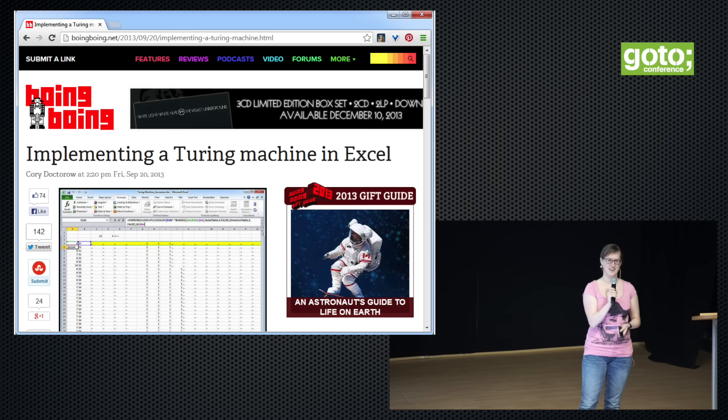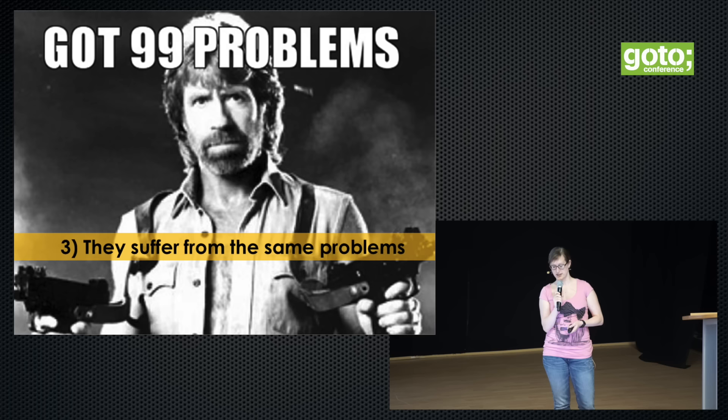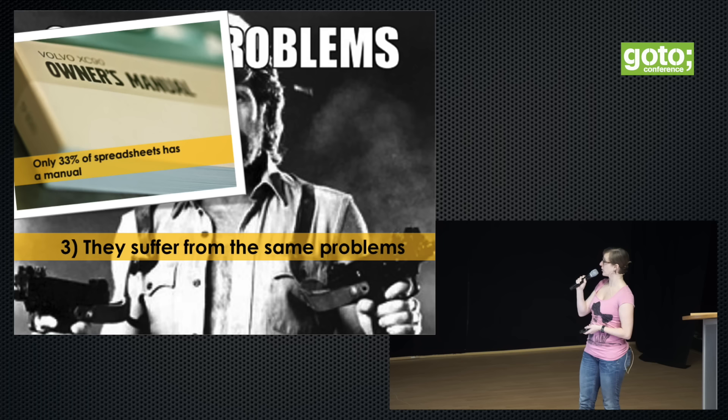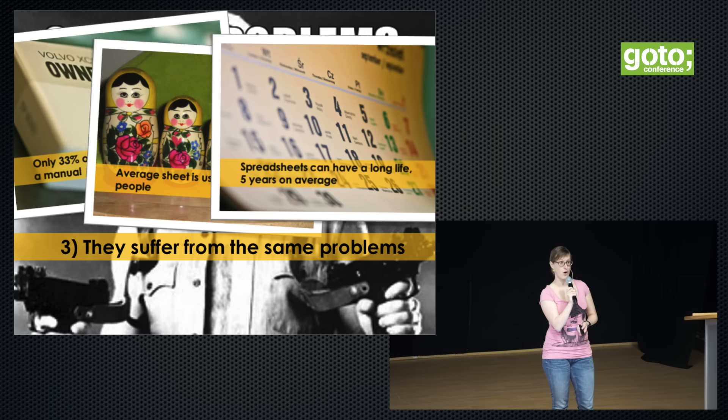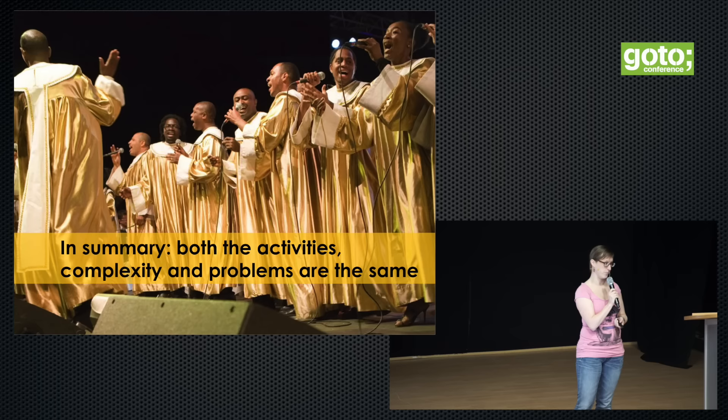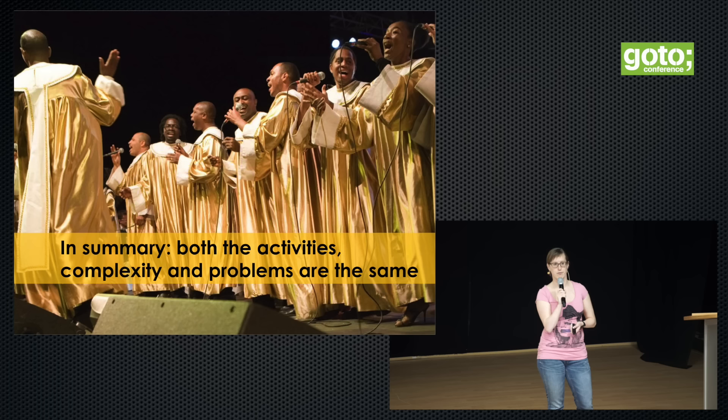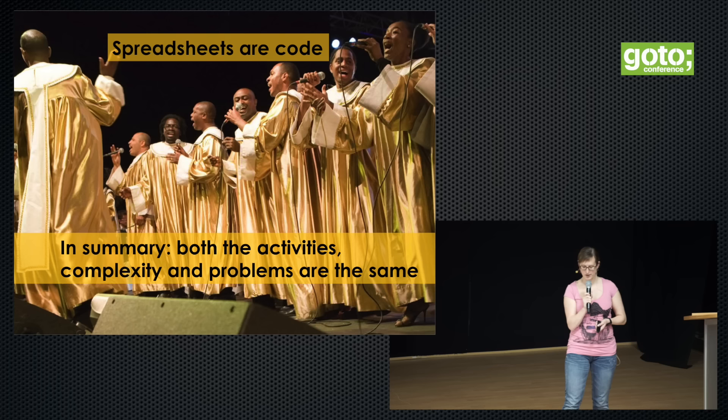The second reason why you should consider spreadsheets as programming is that they suffer from typical software engineering problems. For example, only one in three spreadsheets has a manual. Spreadsheets are used by an average of 12 different people over their lifespan that averages five years. This really sounds like the problems we had in programming in the 60s, 70s, and 80s when people realized that the COBOL script they once built was still in use 10 years later. Typical software engineering problems — we see them in spreadsheets as well.